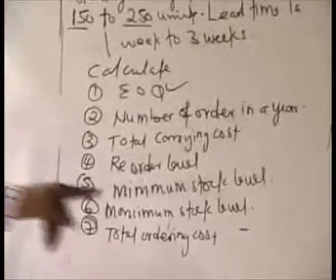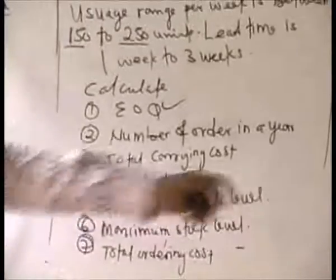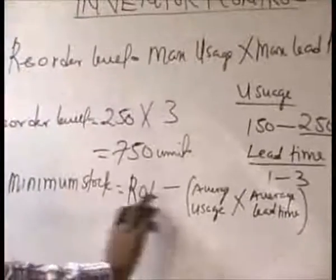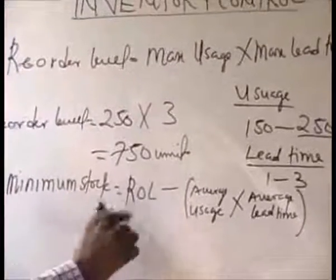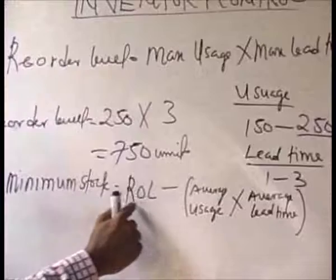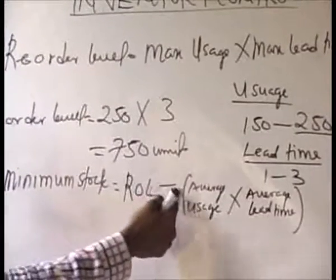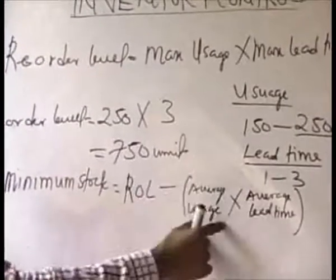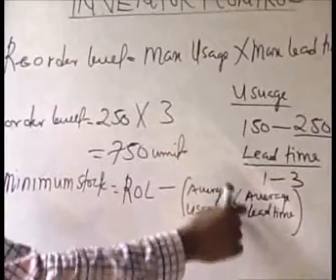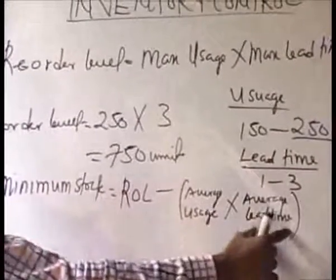So let us now go to number 5. Number 5 says we should determine the minimal stock level. The formula is: reorder level (ROL) minus average usage times average lead time.